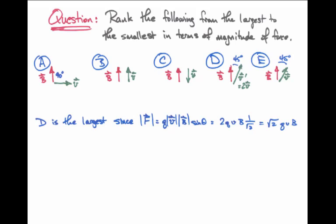In case D, the velocity vector is stated to be twice as big as the other velocity vectors in the four other pictures, so we have a factor of two right here.